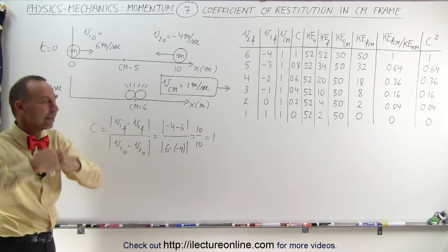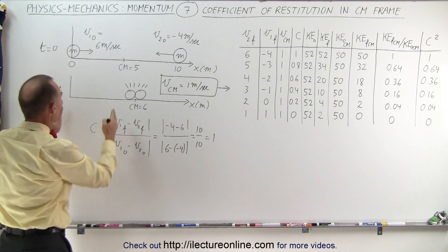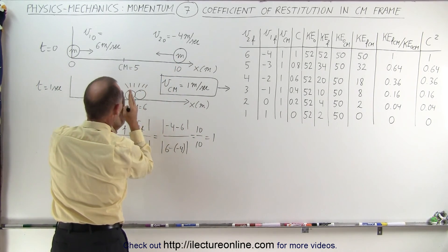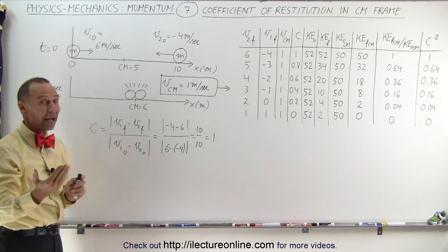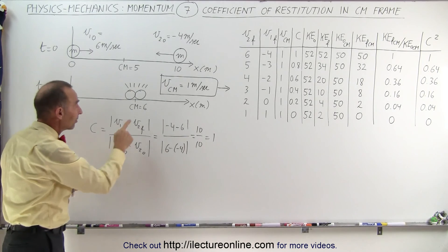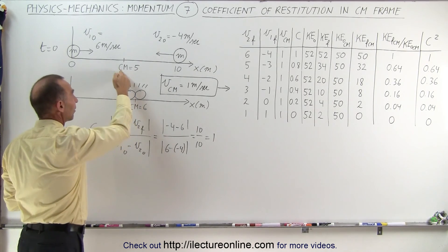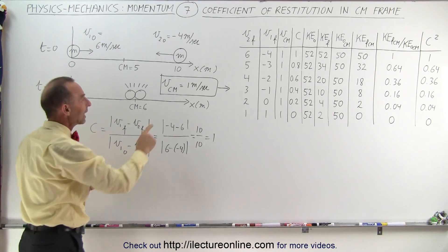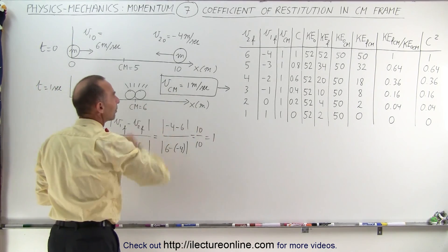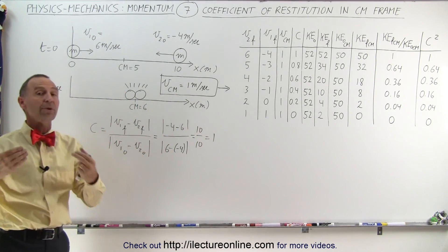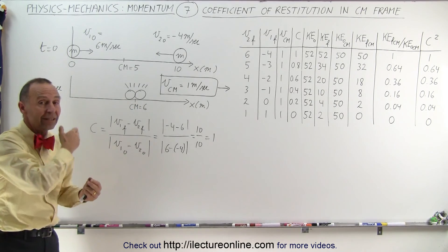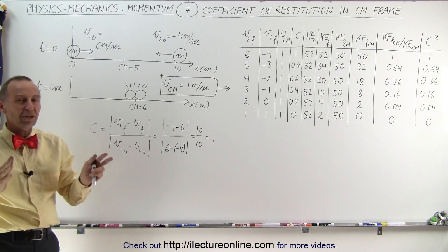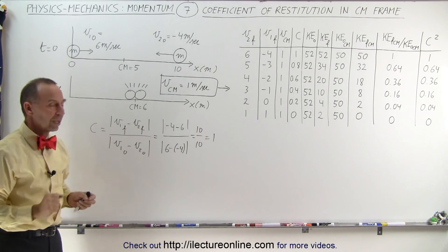One second later, they collide. The one on the left moved 6 meters, the one on the right moved 4 meters, and they're now in the same location. The center of mass is now at 6 meters — it moved 1 meter to the right in one second, meaning it's moving at 1 m/s. As we learned in previous videos, the center of mass will continue to move to the right before, during, and after the collision at 1 m/s.